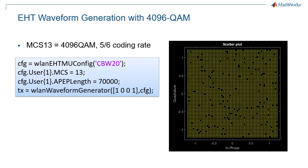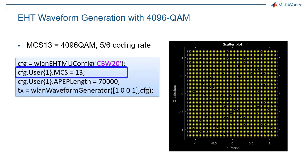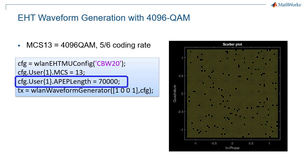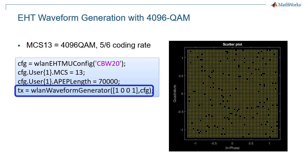Here is how easily you can generate a 4096 QAM 20 MHz EHT waveform with MathWorks WLAN Toolbox. Declare an EHT MU configuration with 20 MHz channel bandwidth, set the MCS to 13, which corresponds to the most aggressive modulation encoding scheme using 4096 QAM, specify a payload length, and invoke the Wireless LAN waveform generator. The picture on the right shows the 4096-QAM-like constellation obtained for a frame with 70,000 bytes.